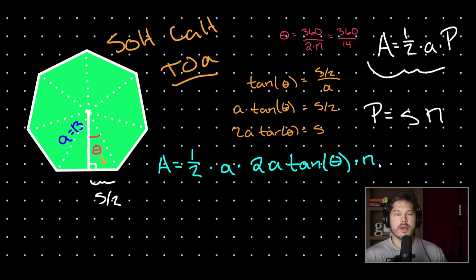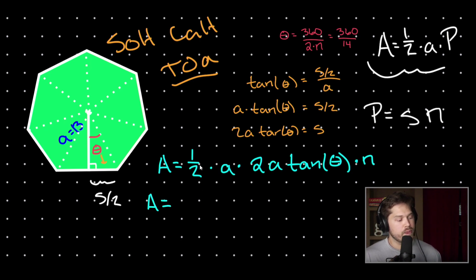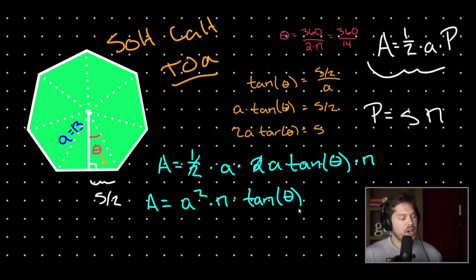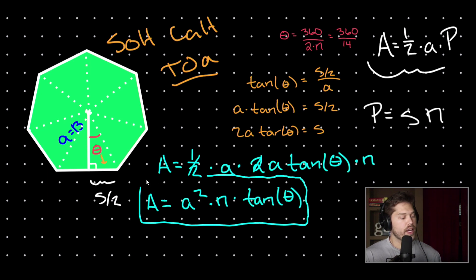This is the full formula we can now plug values into to solve for our area. Let's simplify: one-half times 2 cancels out, and we have apothem times apothem, which is apothem squared, with n out on the far right. So our area equals our apothem squared times n times tangent of theta. Remember that n is the number of sides in our regular polygon. We can use this formula whenever we are given only the apothem.